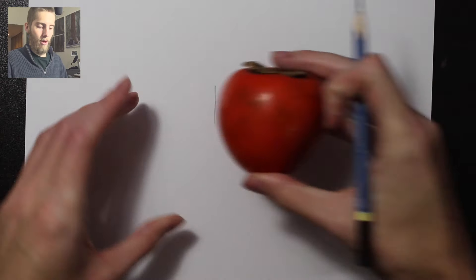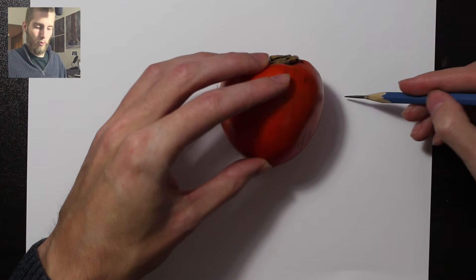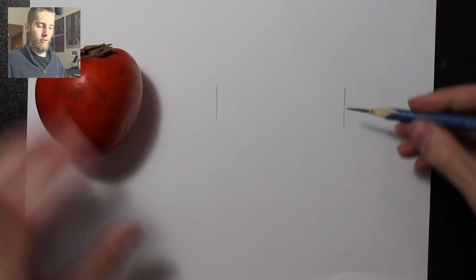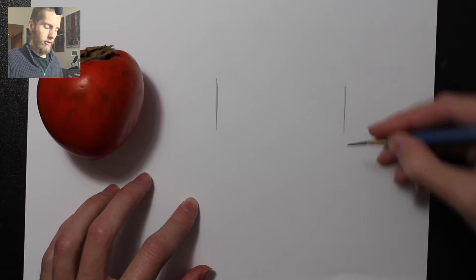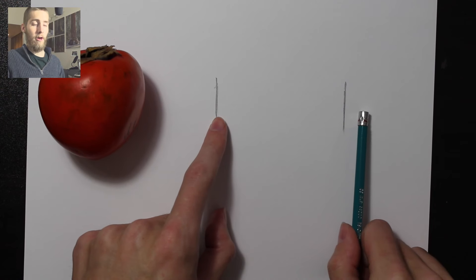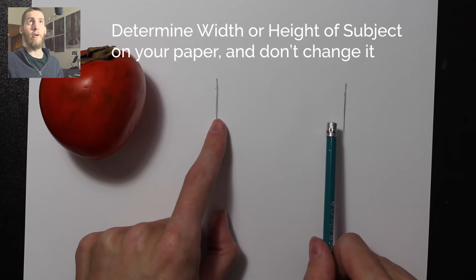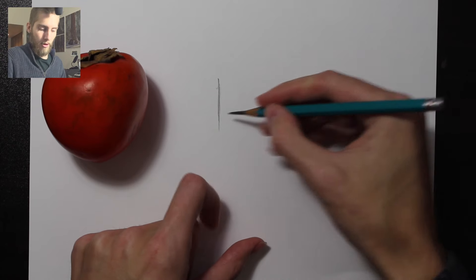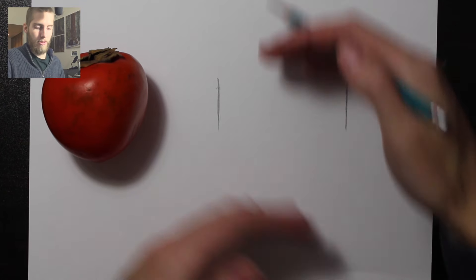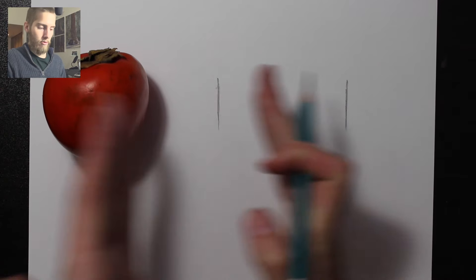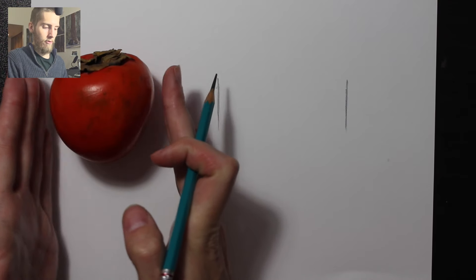So I'm going to determine the width. Since I have the object right next to me, I want to make sure the width is wider than the actual object because I want to draw it larger than life. Now that I've determined the width, I don't want to change the width at all throughout the drawing process. I want to keep that width exactly where it is and not adjust anything as the drawing progresses.